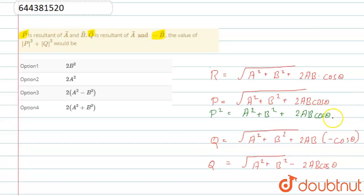So let's say this is our equation 1 and here Q square is equal to A square plus B square minus two AB cos theta and this is our equation 2.